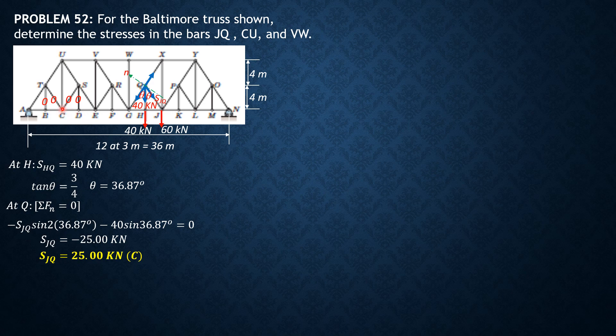We then proceed to joint C. Everything is 0, so it's like there are only 3 members: BC, CD, and CU. Then CU is oblique from members BC and CD. Therefore, CU is 0. SCU is 0. That's the stress in member CU.